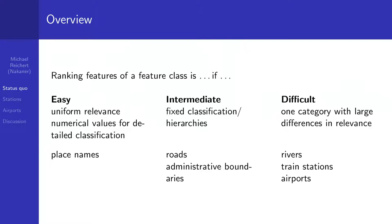Administrative boundaries are an example where a fixed classification is available, but some countries have administrative units that are quite small yet high in hierarchy, which would clutter the map. Ranking features is difficult when one category has large differences in relevance — as with rivers ranging from small streams to very wide waterways under one tag, train stations with 10 to 100,000 passengers per day, and airports from two flights per week to hundreds per minute.